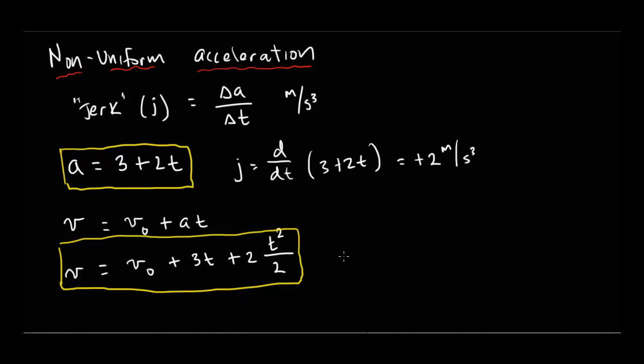If I want to know the position at any time t, I'm going to go ahead and take the integral again. I get the initial position plus I've got to take the integral of all of these terms here. So this is going to be 3t squared over two plus, the twos are going to cancel out, so this is going to be t cubed over three. All right. So now I've got some expressions.